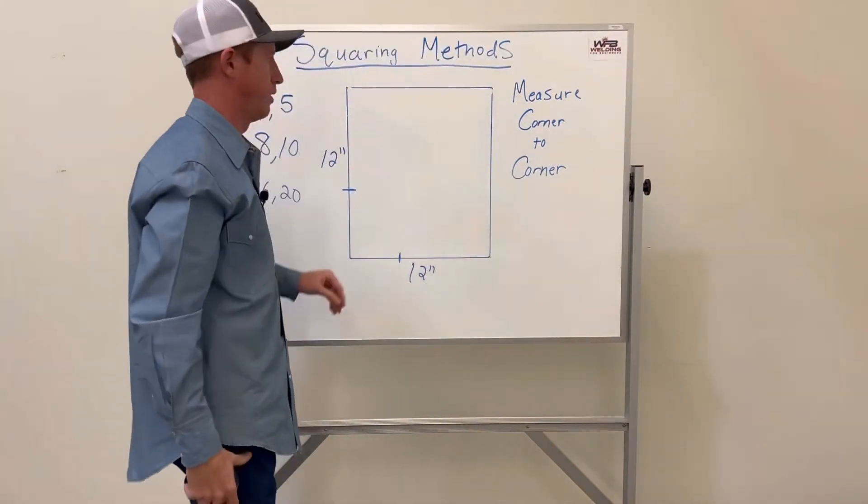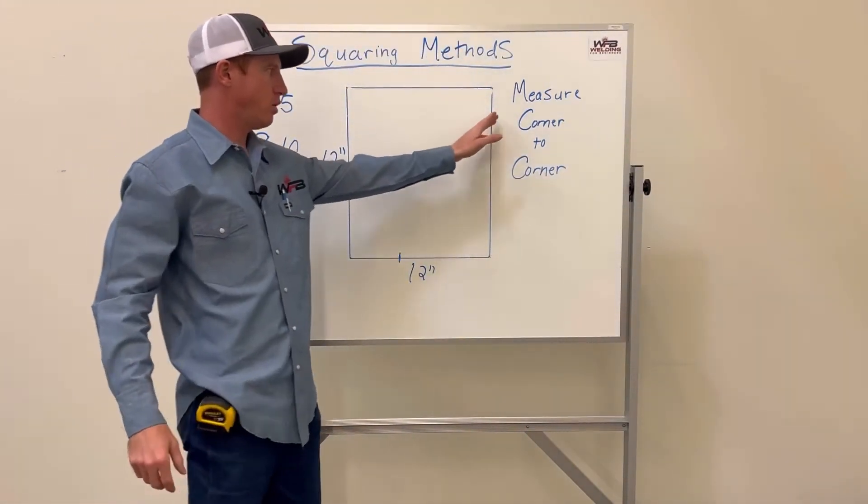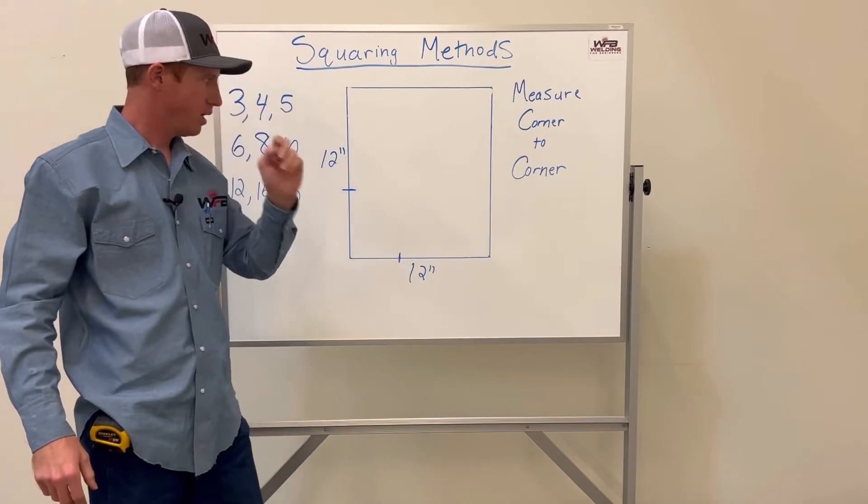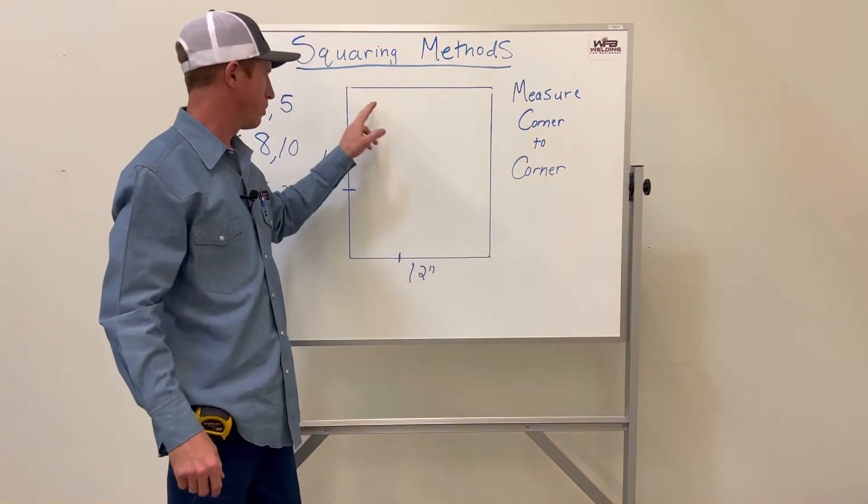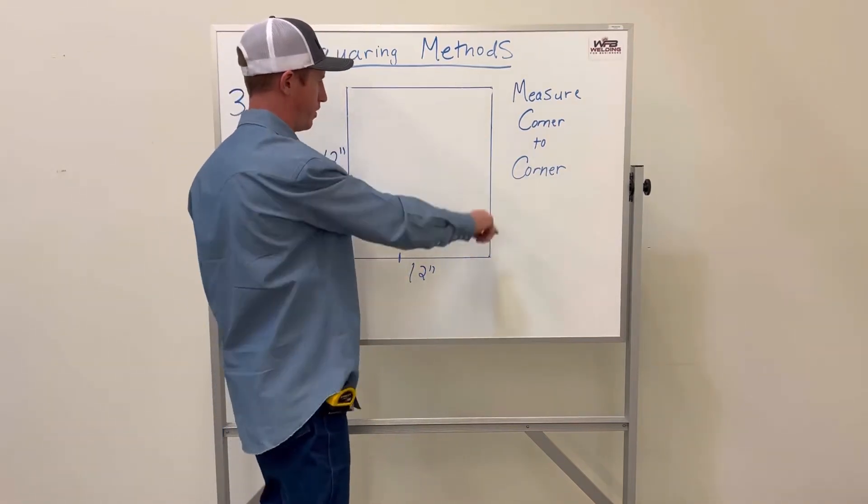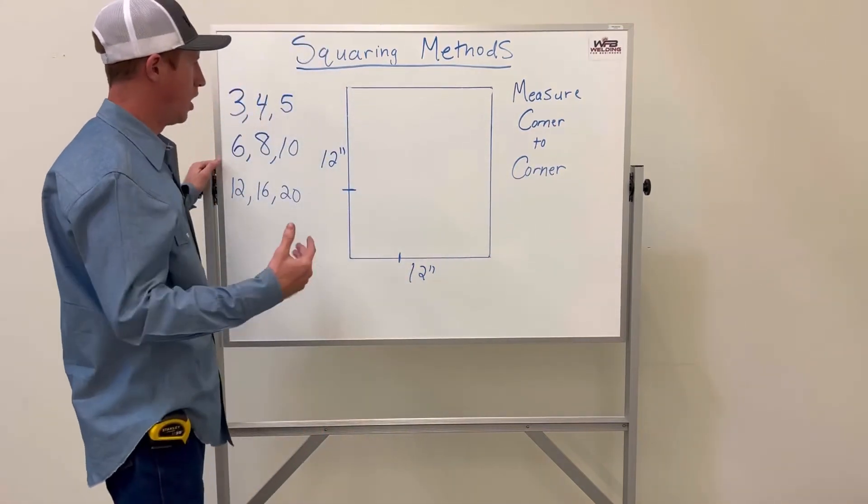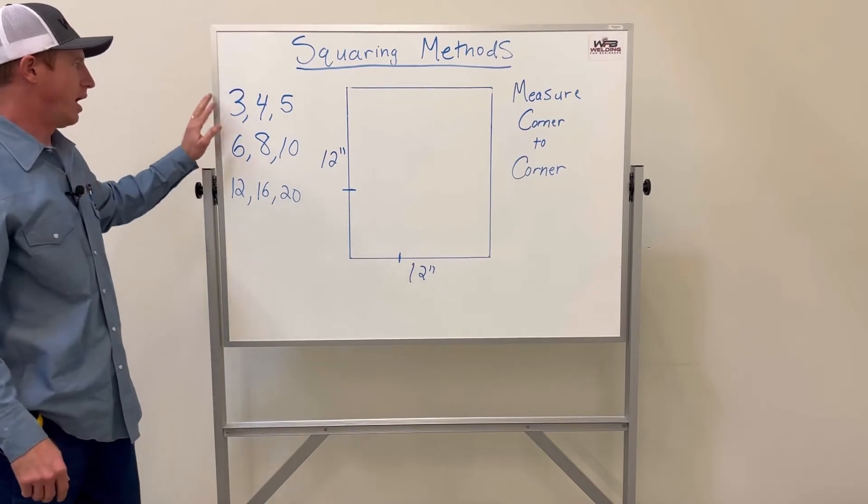That's a perfect square. That's a good way to square—I do that quite often. Just measure from corner to corner, and then corner to corner. If those measure the same, that's a perfect square.